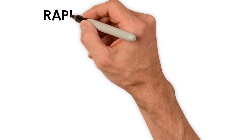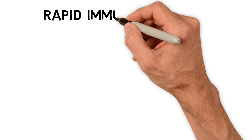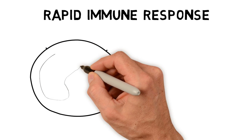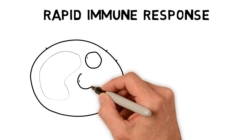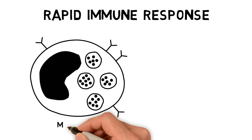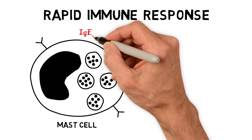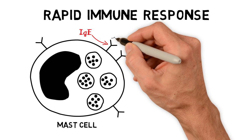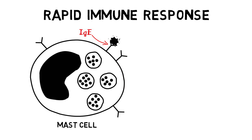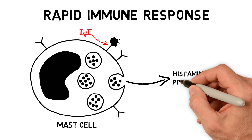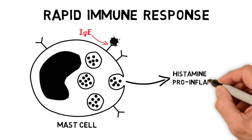There are two immune response pathways that contribute to asthma symptoms. The first response is rapid and is due to mast cells found in the mucosa. Mast cells have IgE molecules on the surface. When these bind an antigen, like part of an allergen, the granules in the mast cell release histamine and pro-inflammatory substances.